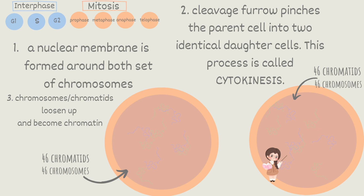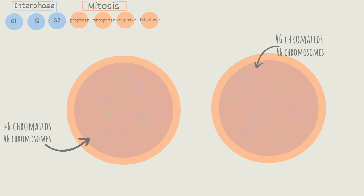When telophase is absolutely complete, the cell is now able to make its way into the cell cycle again, or leave and go into G0. G0 is also known as the resting phase, where cells just do their normal jobs and don't have to worry about replicating themselves. We've gone over the entire cell cycle, but there are a few other important points you need to know about cell division.